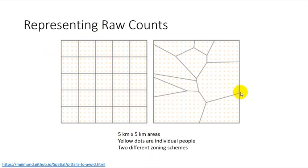Here we've got the same distribution of people or houses but we have a different zoning scheme. Here we've broken it up into these trapezoids to create a different kind of aggregation.